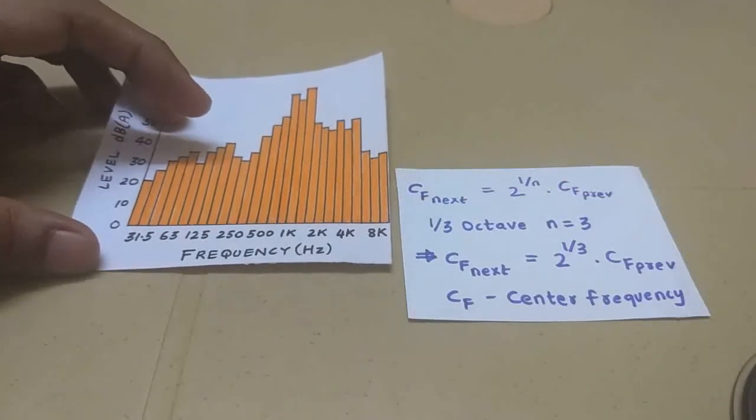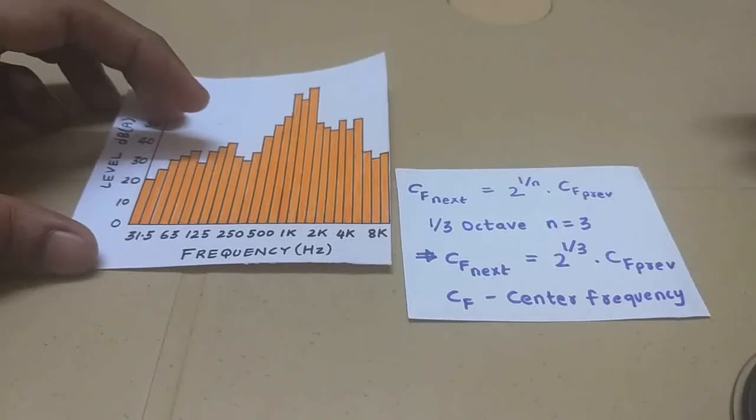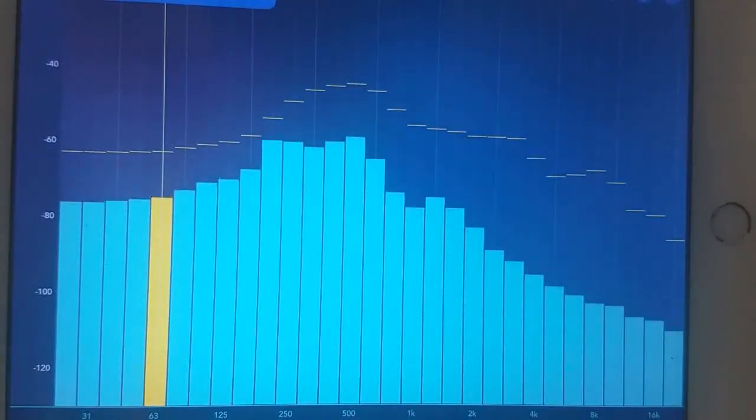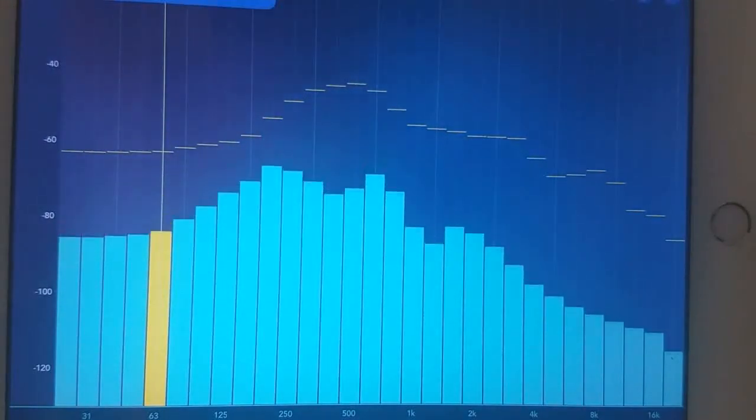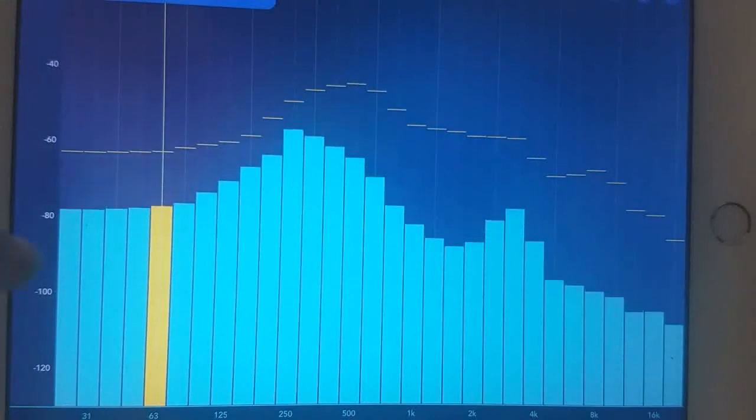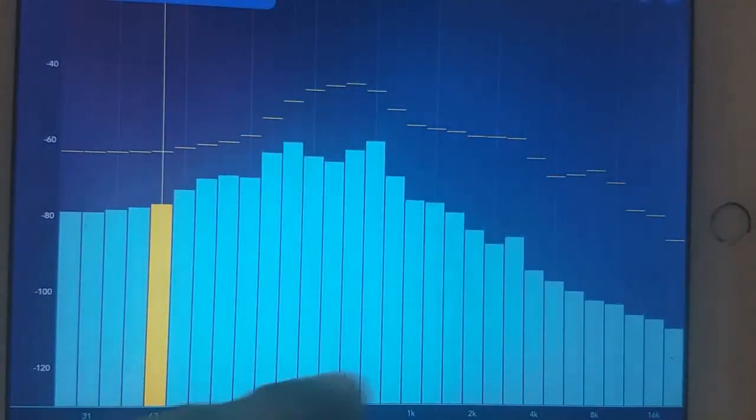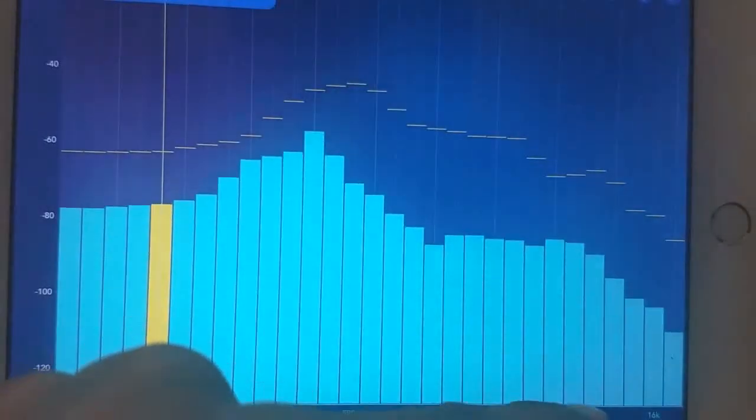Alright, now I'm going to demonstrate how the octave 1/3rd band looks like when I'm speaking in real time. Hello there. This is the 1/3rd octave band real time app. So as I'm speaking it's tracking all the bands all the way from 31.5 Hz to 16,000 Hz.